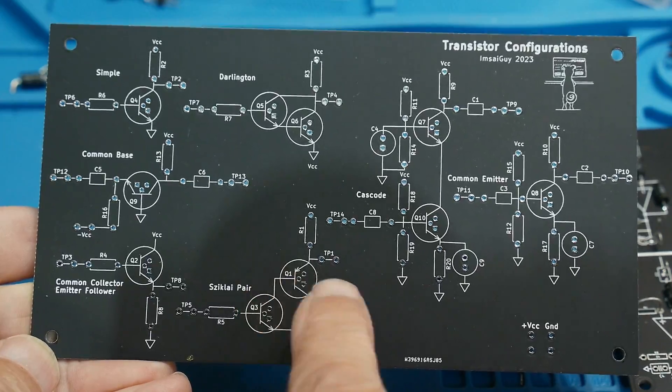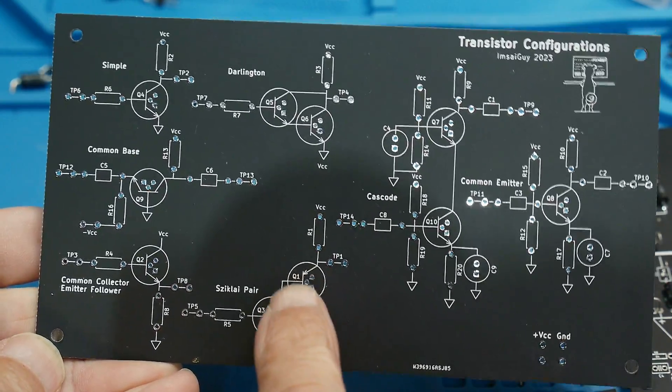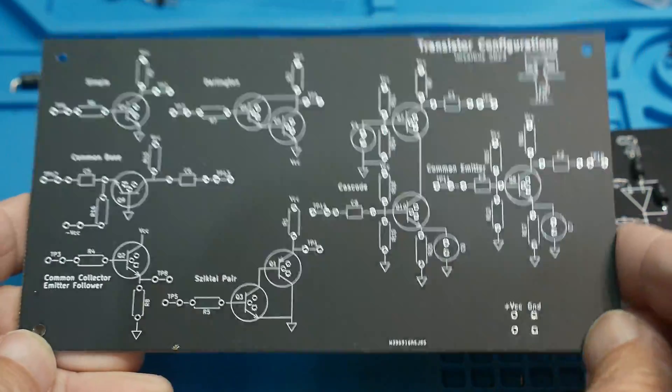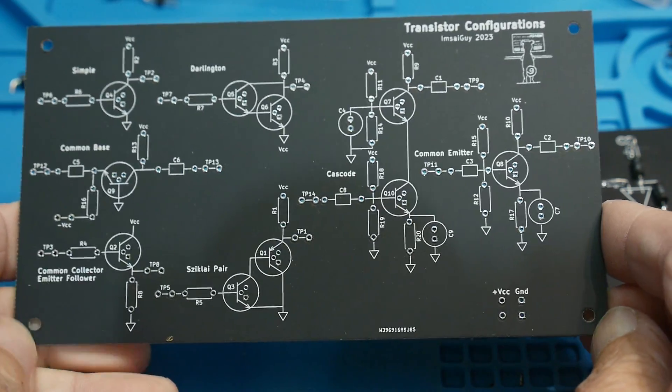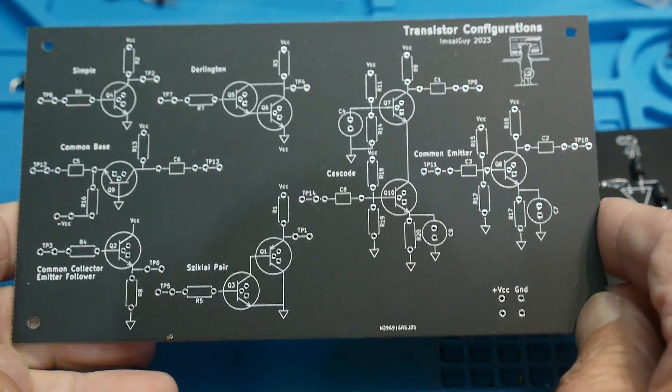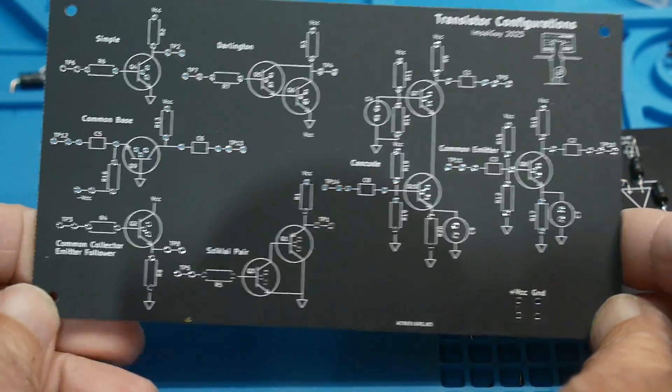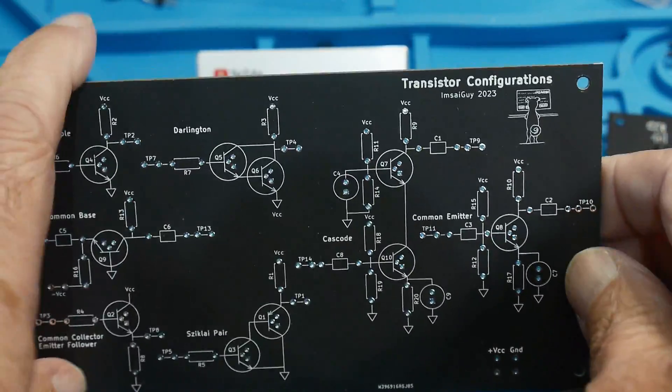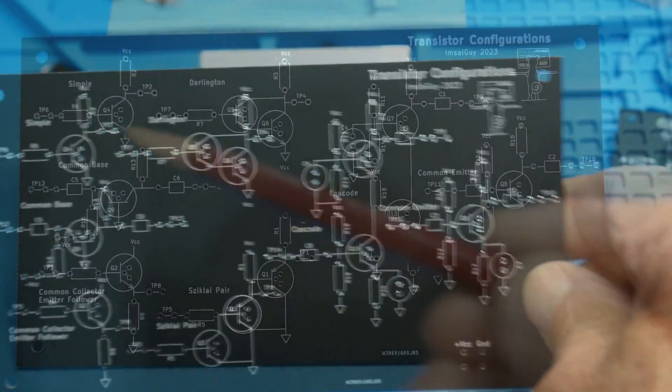This is a PNP. So make sure you put it in the right way around. It's different than all the others, but it's emitter base collector. You can see that right on the schematic. Power comes at the bottom here. And so what's on the board?